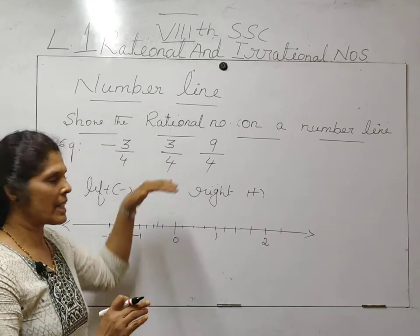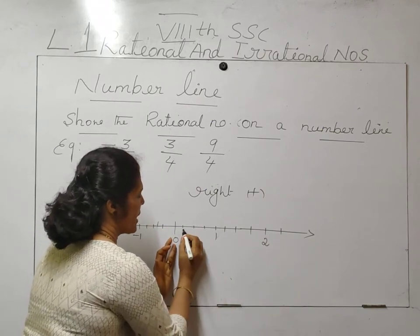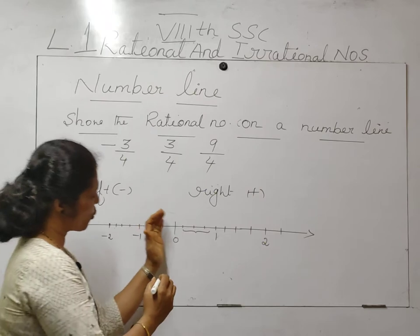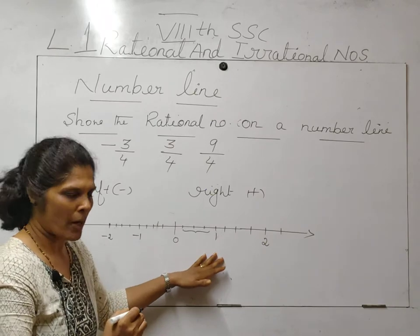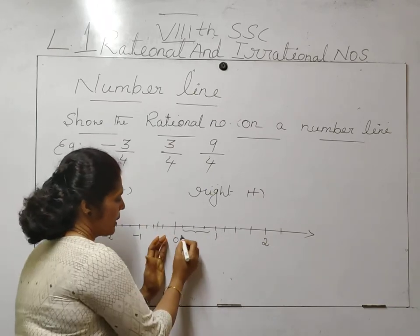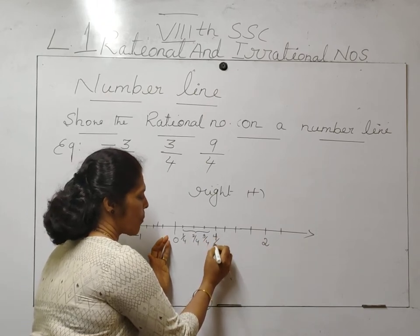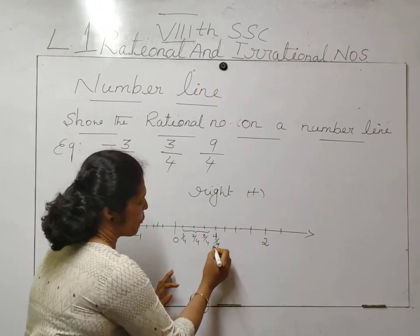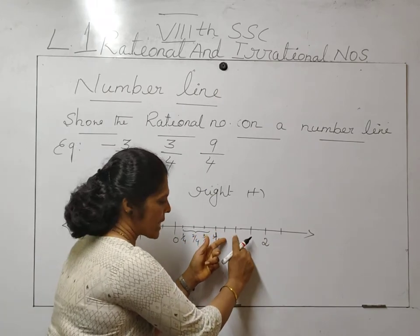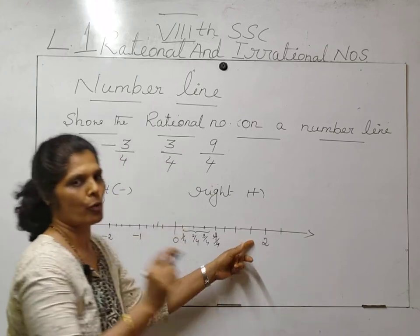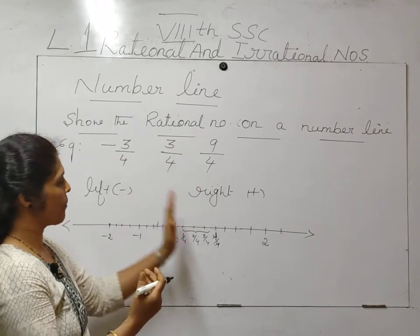The denominator is 4, which means from 0 to 1 the line is divided into 4 parts. Leaving 0, count 1, 2, 3, 4 — divided into 4 parts. So this is 1 upon 4, this is 2 upon 4, this is 3 upon 4, this is 4 upon 4 — and 4 upon 4 means 4 cancels, so this is 1. Continuing: 5 upon 4, 6 upon 4, 7 upon 4, 8 upon 4 — 8 by 4 means the answer is 2.